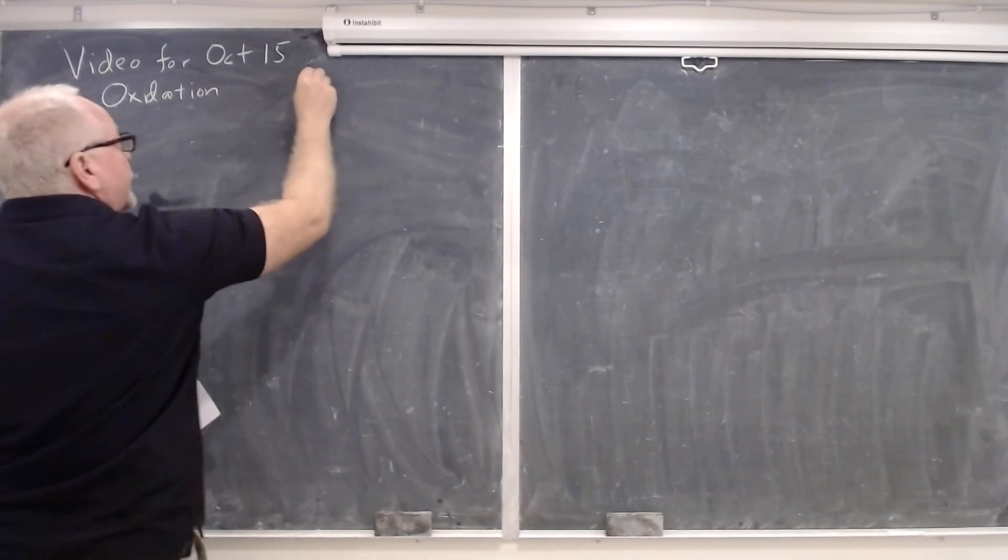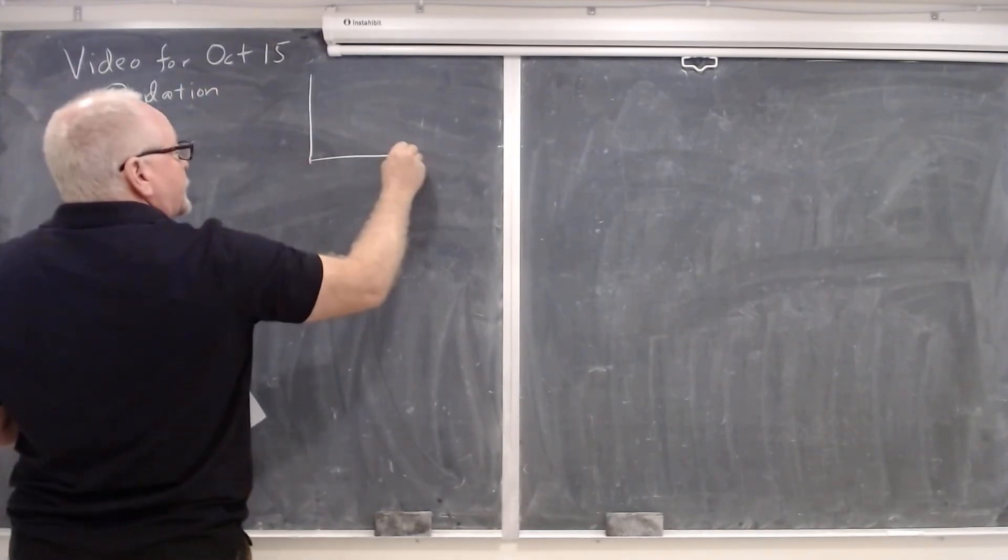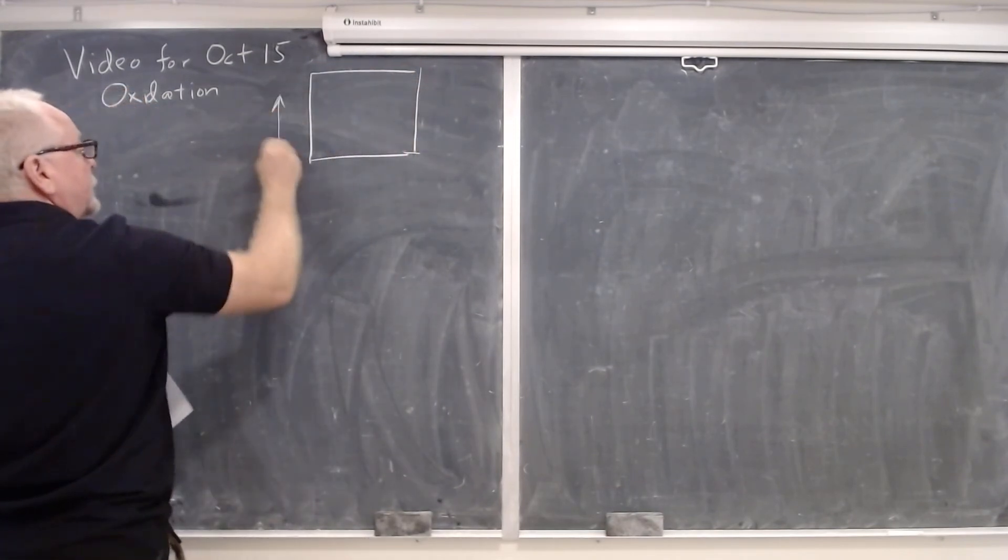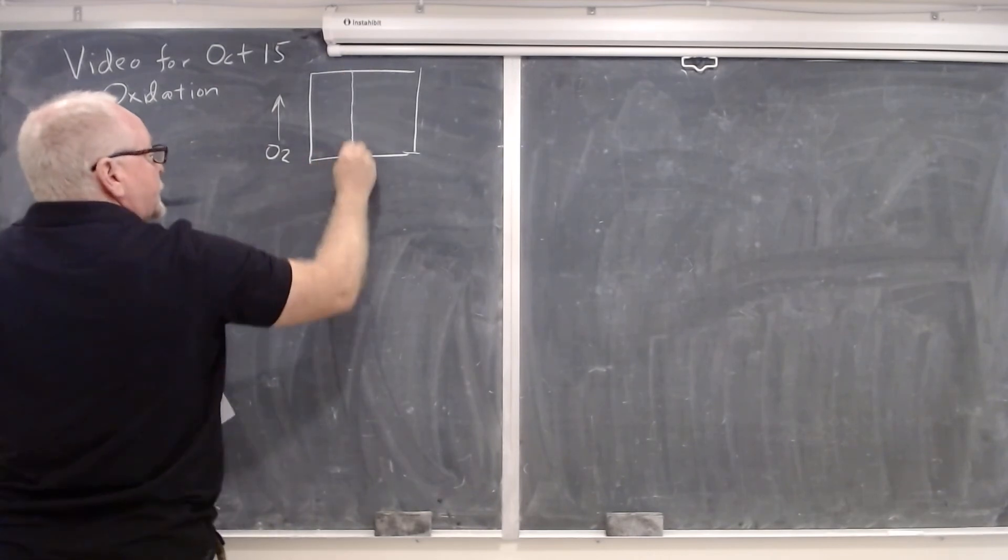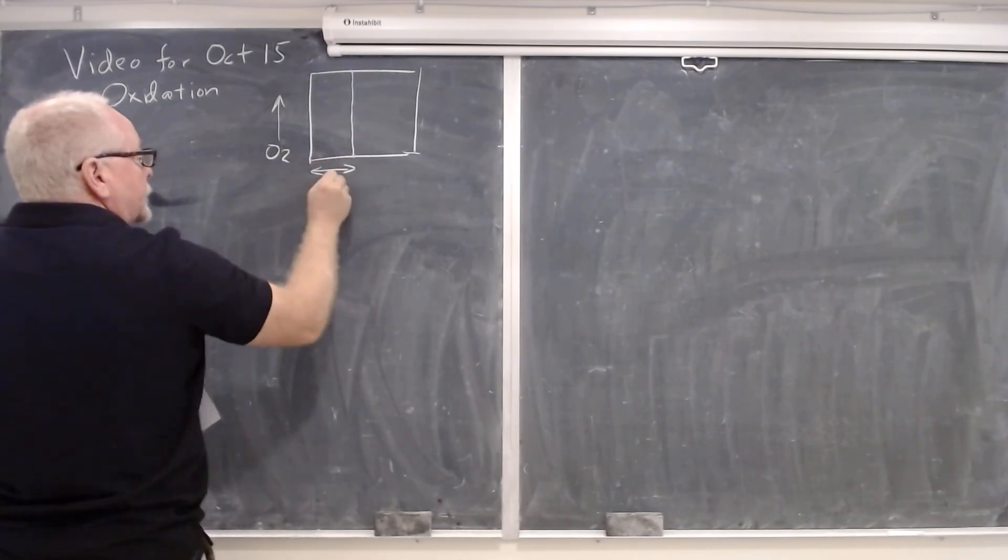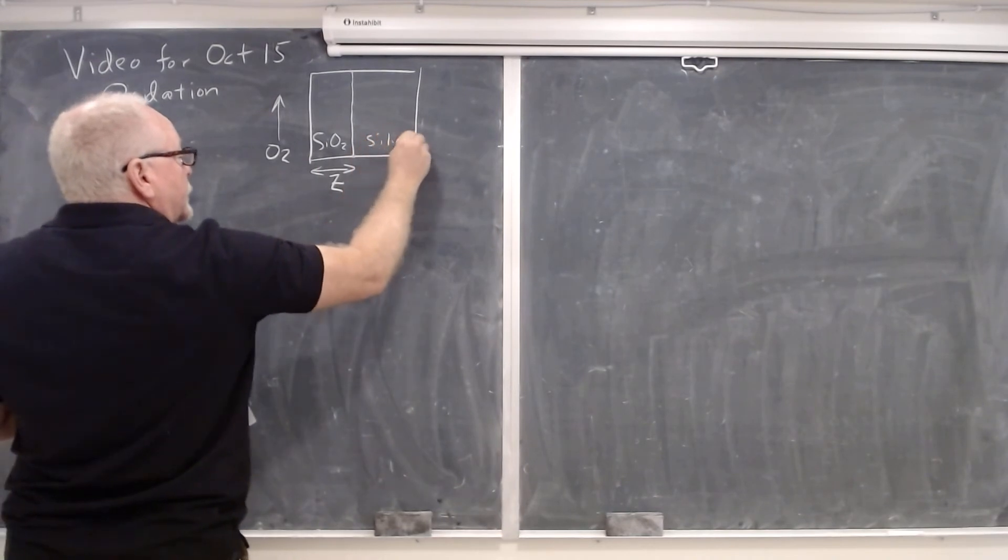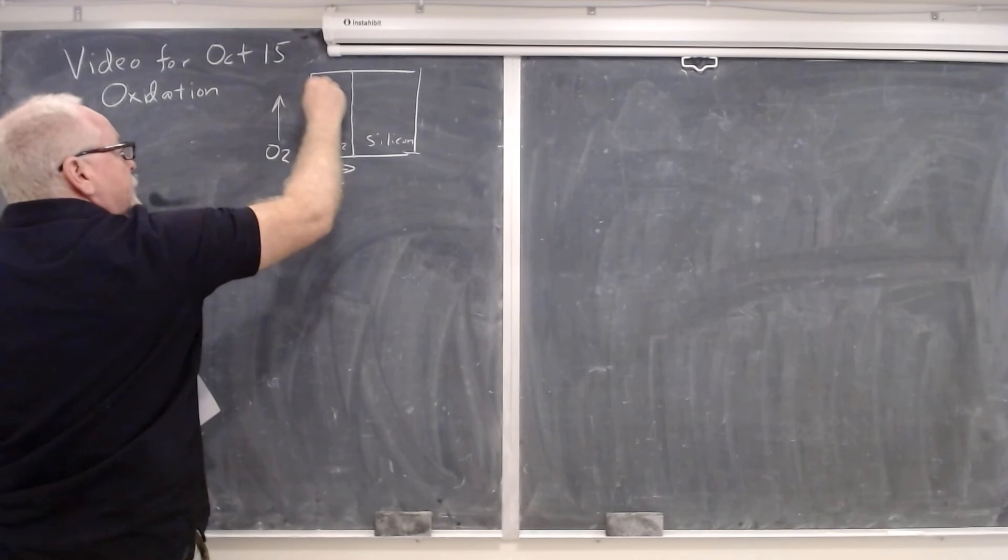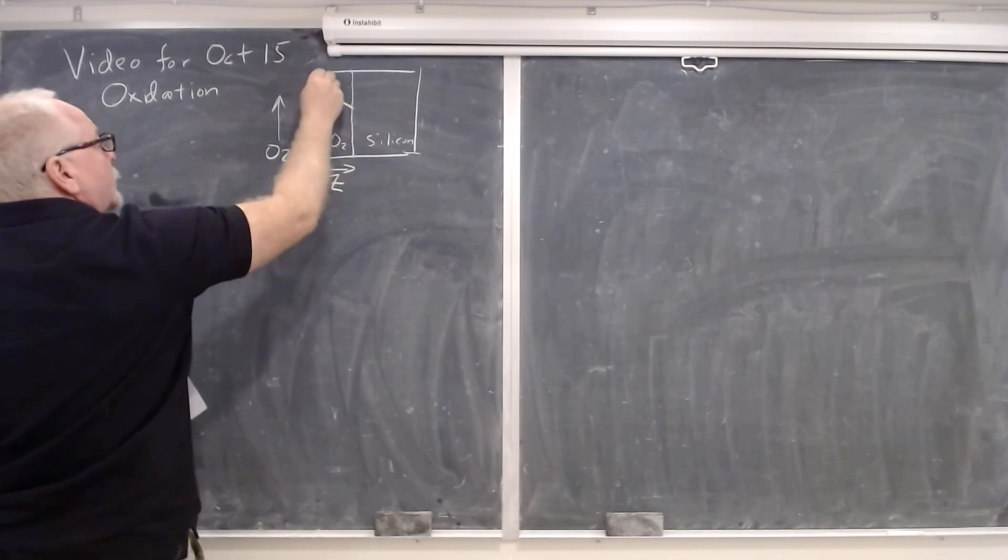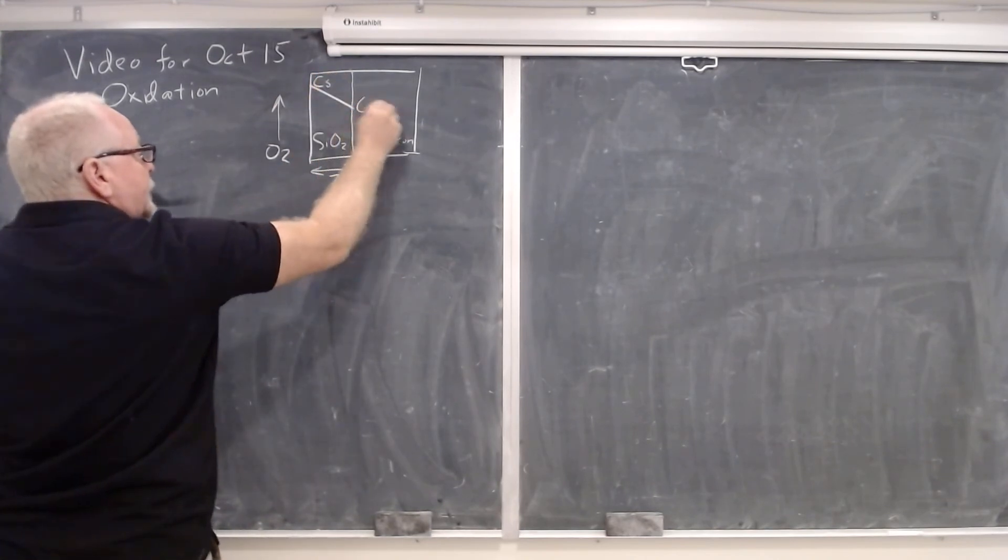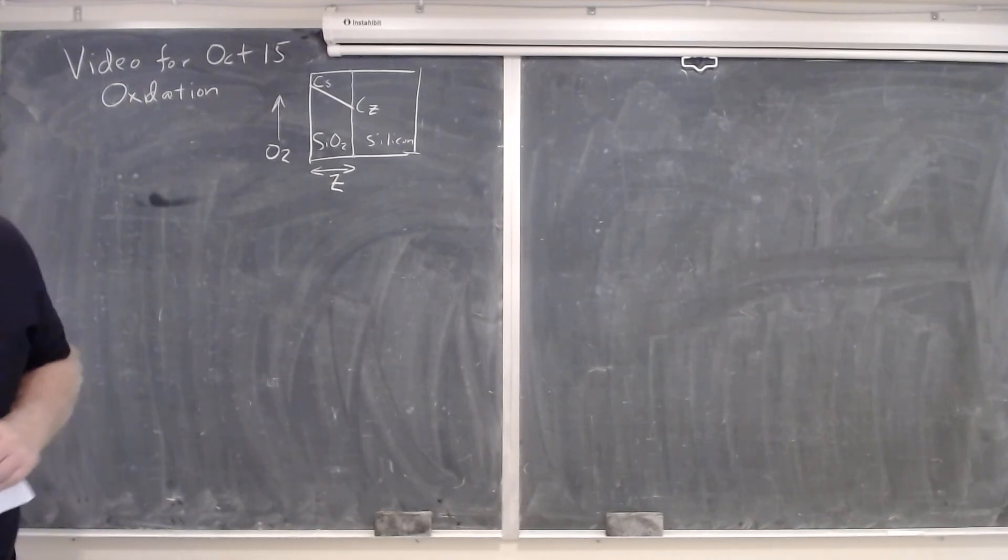Just to reiterate our picture of a silicon wafer on the side here. We have oxygen gas flowing and we've oxidized to a depth capital Z. So this is SiO2 and then silicon. The concentration of oxygen varies linearly through the oxidized layer with a value equal to Cs at the surface and C sub Z at the interface between silicon and silicon dioxide.